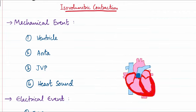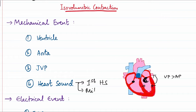During the isovolumetric contraction phase, the ventricles start to contract and ventricular pressure exceeds atrial pressure. At this point, the atrioventricular valves close to prevent blood flowing back from the higher-pressure ventricle to the lower-pressure atria. This closure of the AV valves produces the first heart sound, best heard at the mitral and tricuspid areas of the precordium.